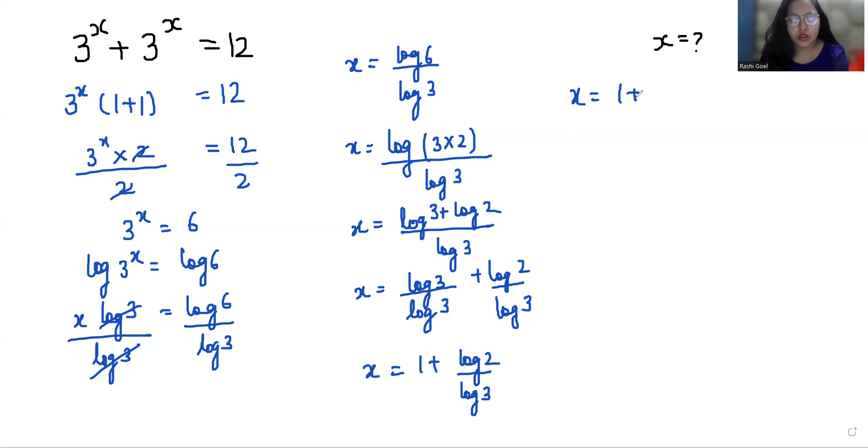Now put the value of log 2 and log 3. Log 2 is 0.301 and the value of log 3 is 0.4771. So x equals 1 plus when we divide this 0.6309, and when we add these terms together 1.6309. This is the value of x.